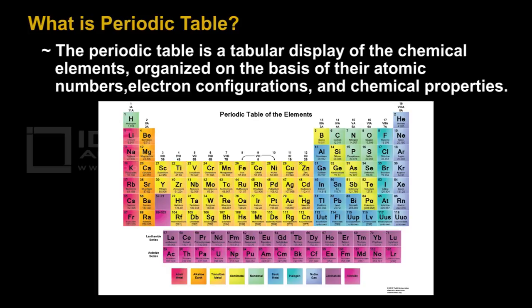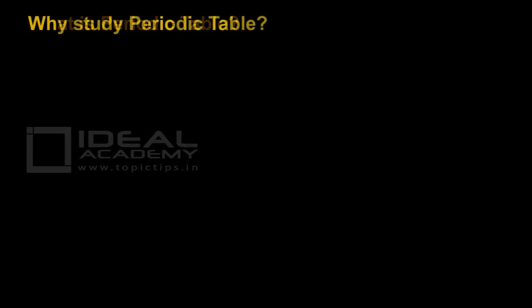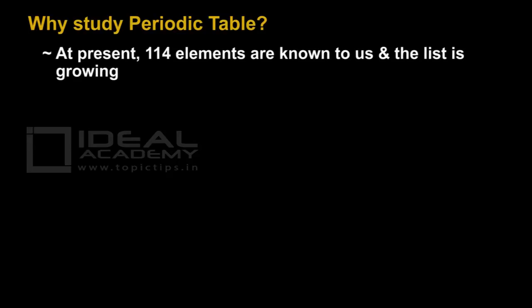Before going into details, let's see why we study periodic table. At present, 114 elements are known to us and the list is growing.